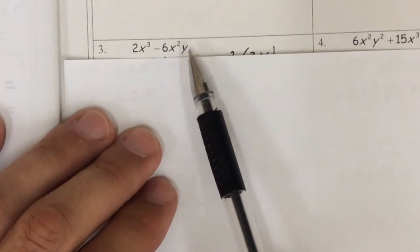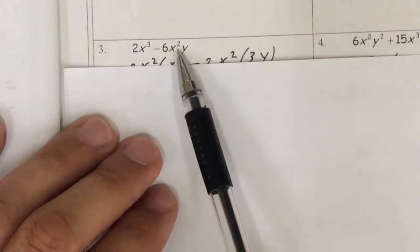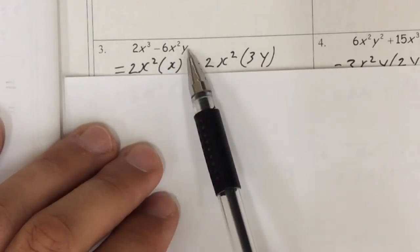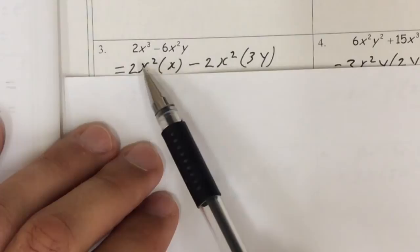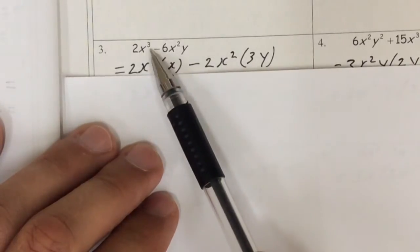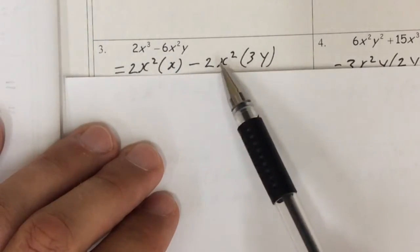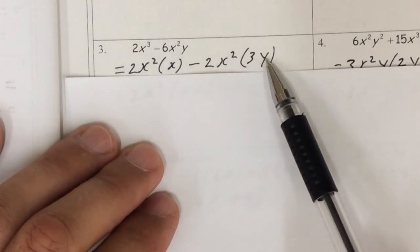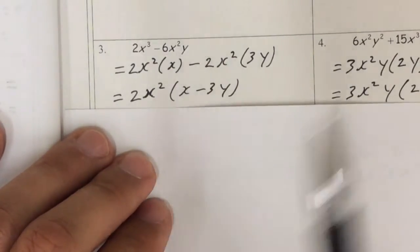Next: 2x cubed minus 6x squared y. 2 is a common factor; x squared is a common factor because that's the lowest power of x. There's no common factor of y because y is not in both terms. So 2x squared goes out in front. Times what gives me 2x cubed? I'm only missing one x, so x squared times x is x cubed. Minus: 2 times what gives me 6? That's 3. x squared times what gives me x squared? That's 1, which I don't write. Then I need a y. So: 2x squared times x minus 3y.